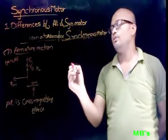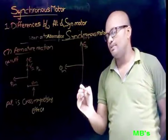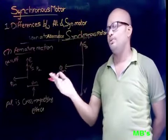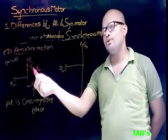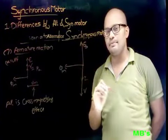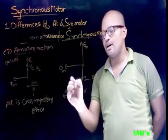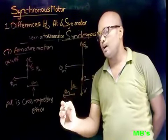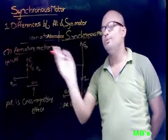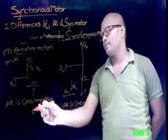In the case of the synchronous motor at unity power factor, the main magnetic field, back EMF EB, and input voltage V are considered. Since current is incoming in a synchronous motor, it is in the opposite direction compared to the alternator. The current is in phase with V, producing armature flux phi_A which crosses the main flux — so the armature reaction is also a cross-magnetizing effect. Thus, at unity power factor, the armature reaction in both alternator and synchronous motor is a cross-magnetizing effect.